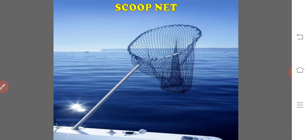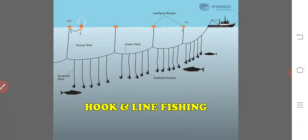The scoop net or dip net — also known as hand nets — may be of several shapes: triangular, rectangular, or square. Generally, prawns, catfishes, and murals are caught using scoop nets or dip nets.